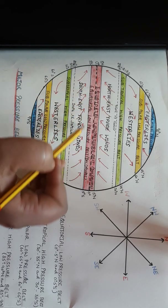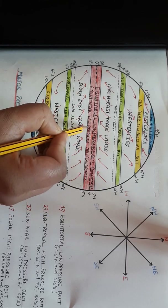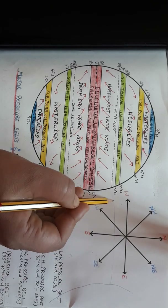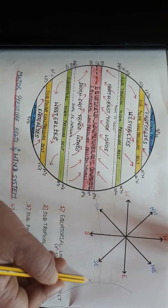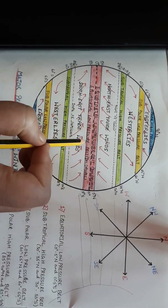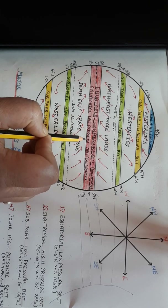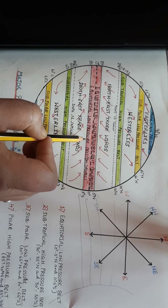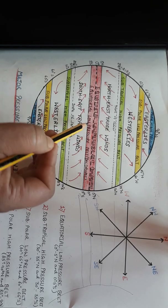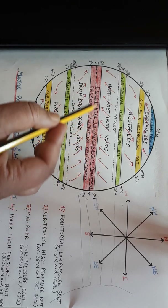Now why does this region experience low pressure throughout the year? What happens here is that sun rays fall directly on this region. So when sun rays fall directly, this region experiences more insolation of the sun. As a result, the temperature of the region increases, air becomes warm, and warm air is light so it rises up.